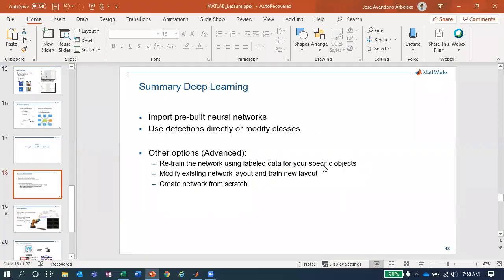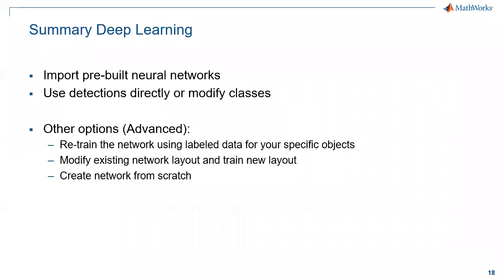To wrap up, these deep learning capabilities are available in MATLAB — import a network in a couple of commands, then use detect or predict commands to get information straight from images. For more advanced users who already know deep learning, you can also do transfer learning — retrain a network with your own images so it improves at detecting the specific objects in your RoboCup challenge. You can also modify network layouts or create networks from scratch, though that's only recommended if you've studied deep learning extensively.